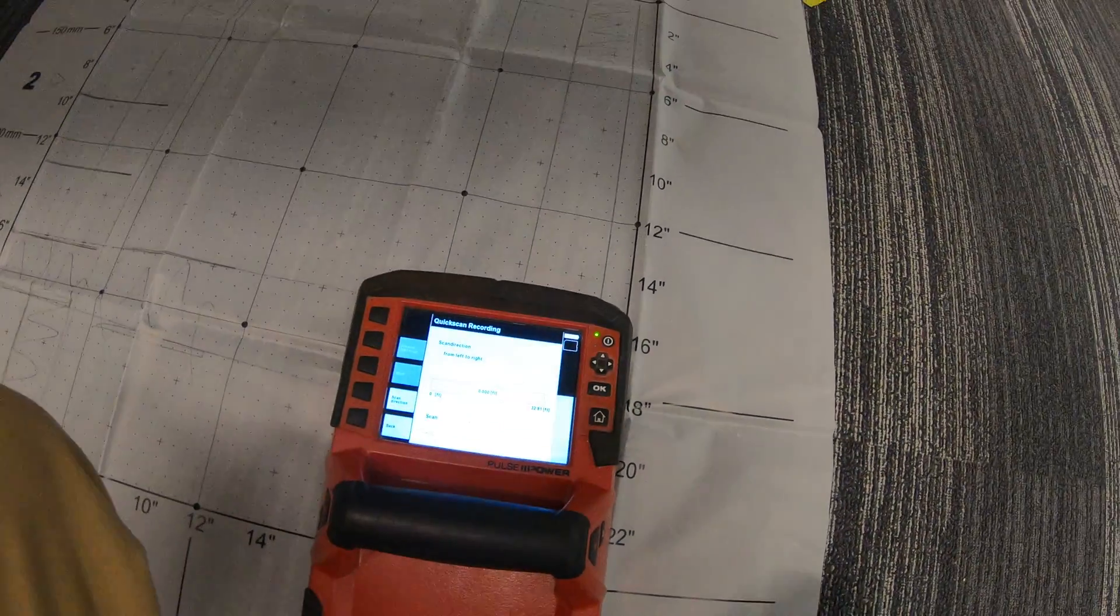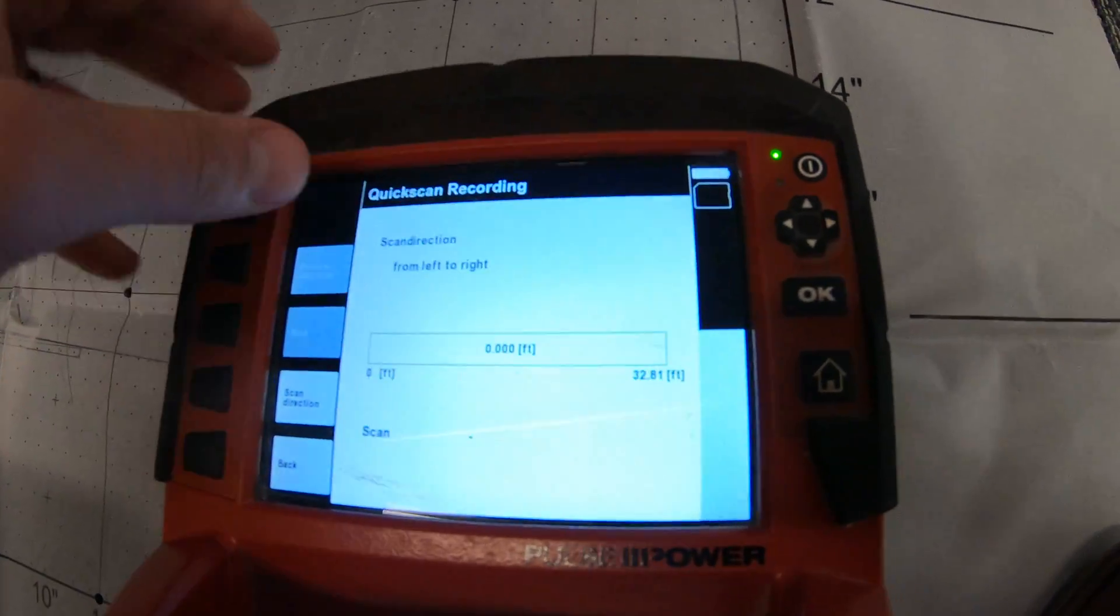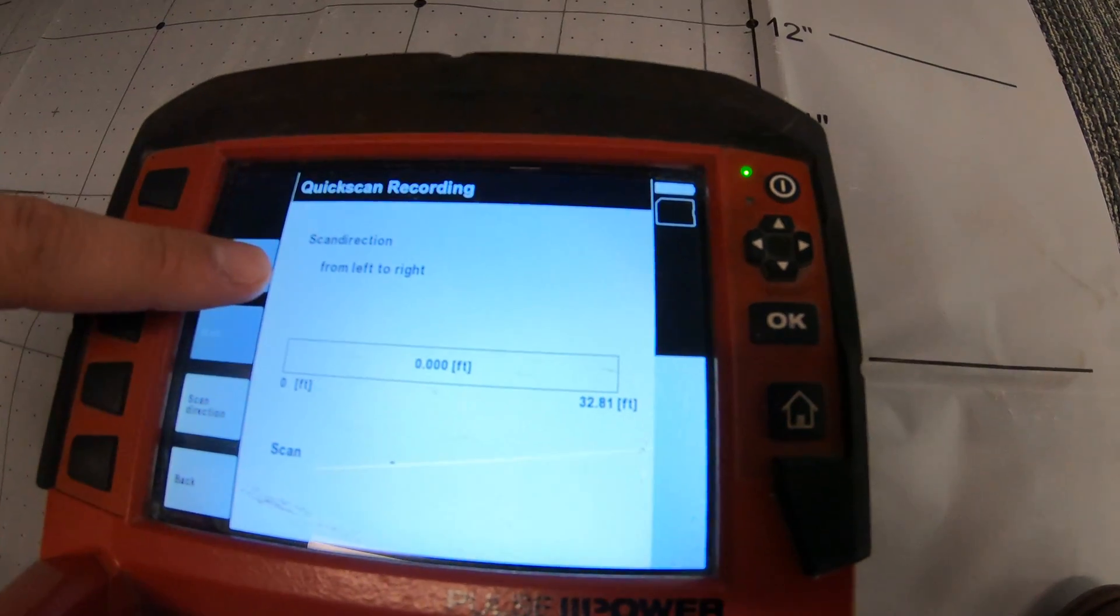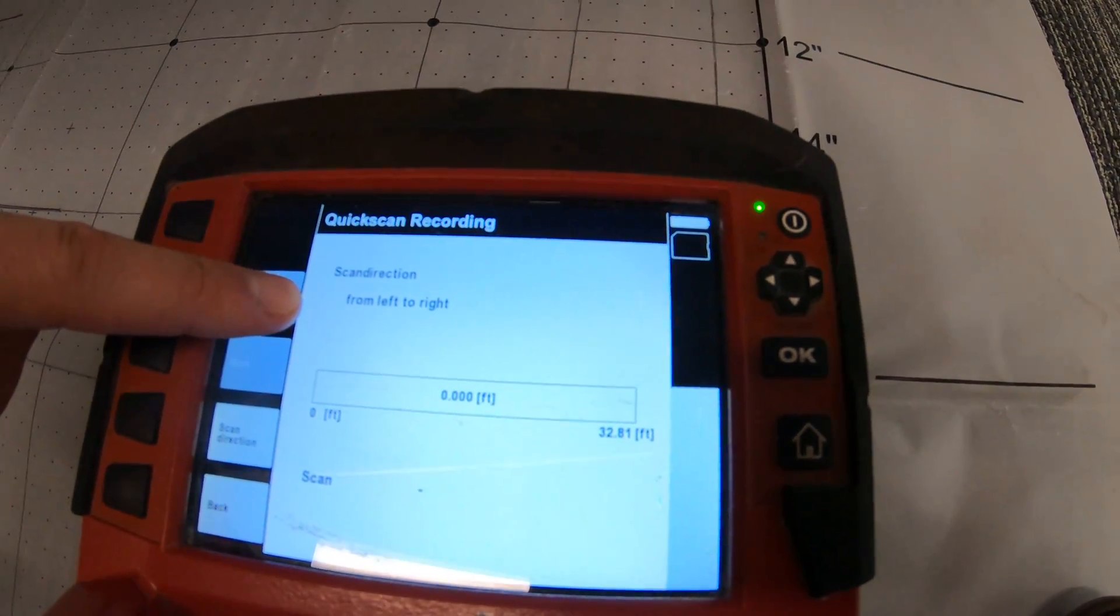Just to give you an example, I'll just do it here real quick. So you see up here it says scan direction from left to right. That's just for your reference if you were to load this onto the software afterwards.